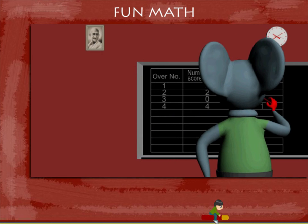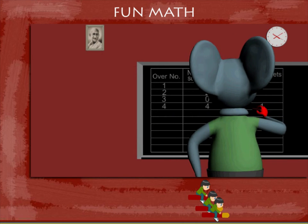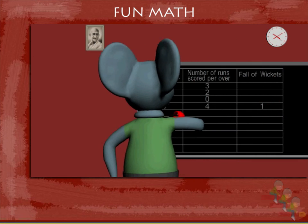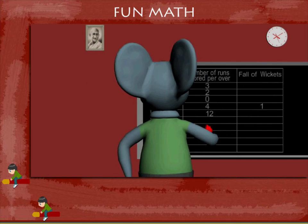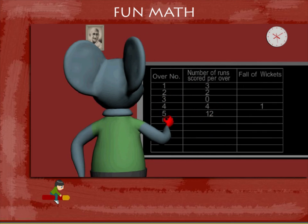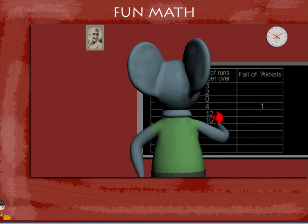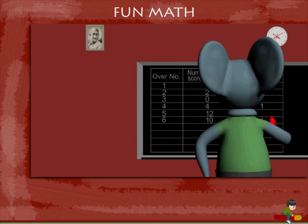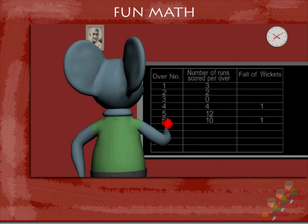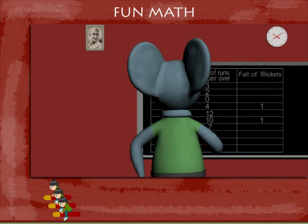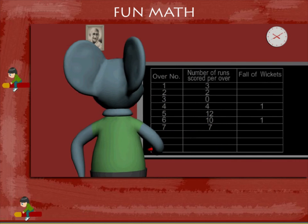In the fifth over, twelve runs. In the sixth over, ten runs, but one more batsman out, so one more fall of wicket.